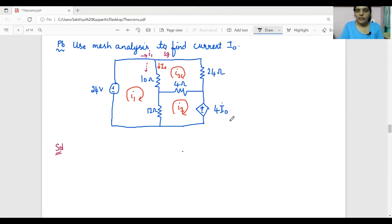So let us apply mesh analysis. There are three meshes, so if you solve those three equations we will get the currents I1, I2, and I3. Let us proceed. Apply KVL to mesh 1.